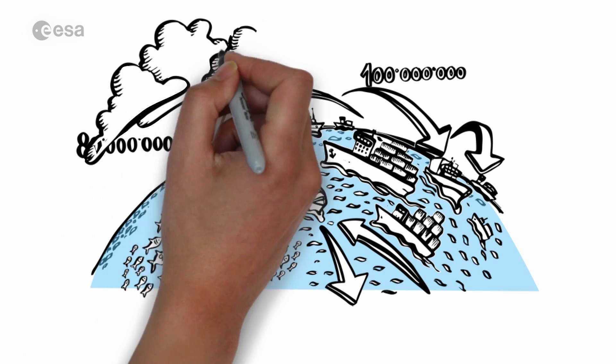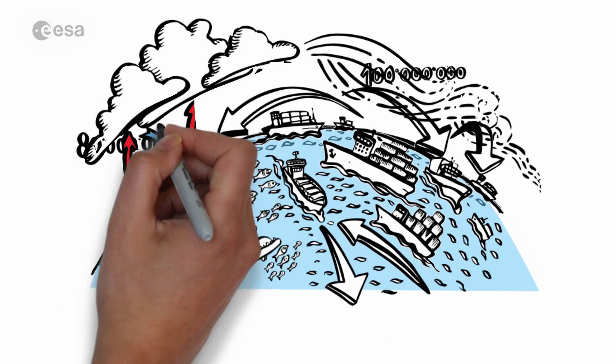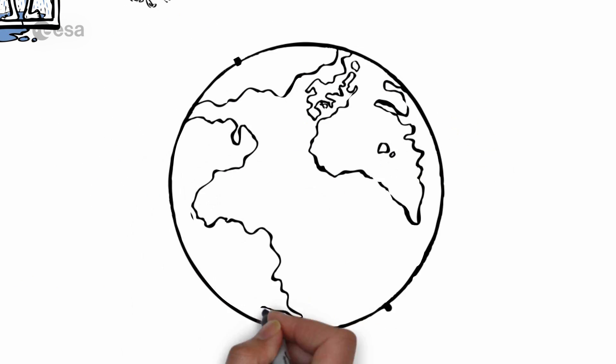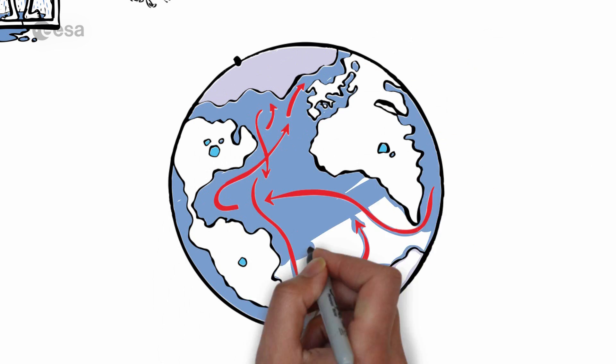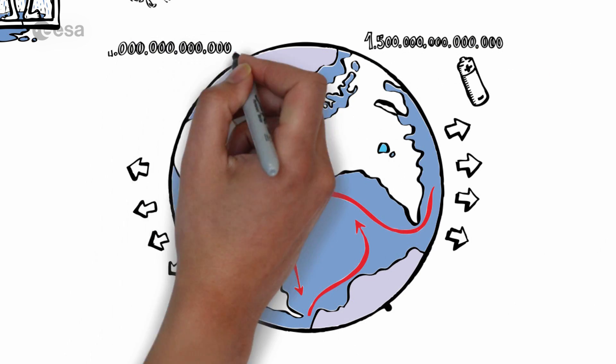The oceans may seem distant but their role is so important in how our climate evolves. Ocean currents shuffle 1.5 million gigawatts of energy around the globe and a trillion liters of ocean water evaporate into the atmosphere every single minute.